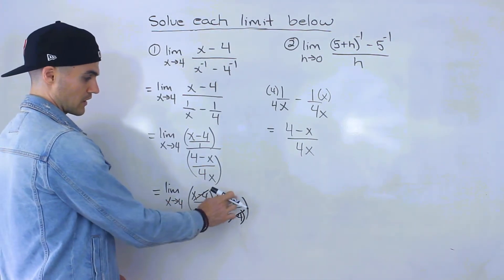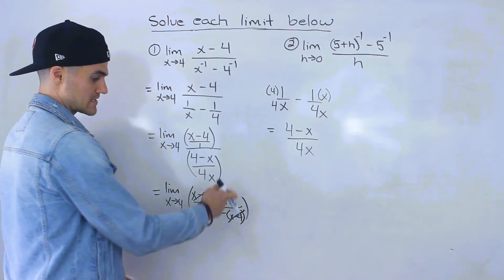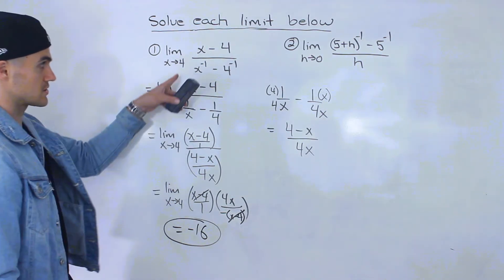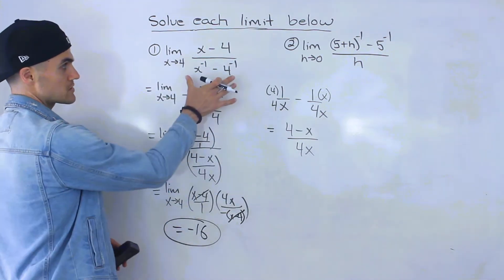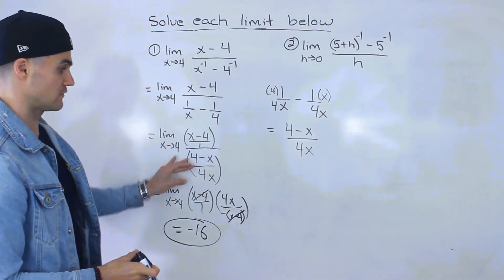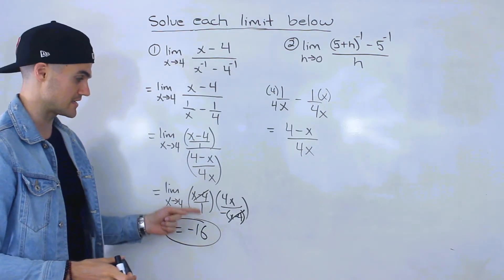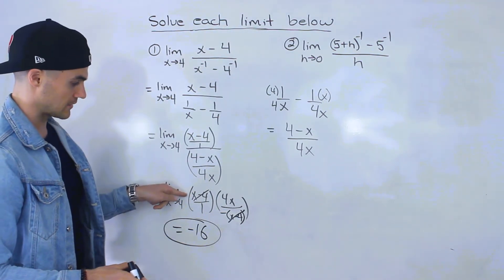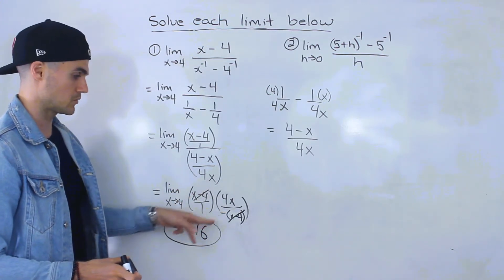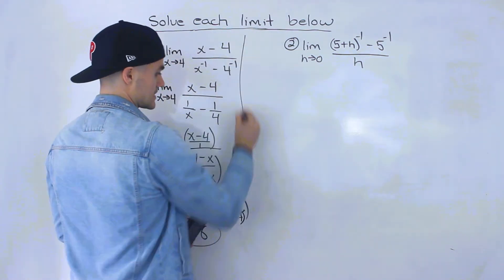Now we can substitute x equals 4, since that x minus 4 is gone from the denominator. Plugging in 4: we get 4 times 4 over negative 1, which is 16 over negative 1, giving us negative 16. So the trick was converting the negative exponents, combining into one fraction, dividing fractions, and factoring out a negative so that x minus 4 cancels. That's why the limit is negative. The answer to number one is negative 16.